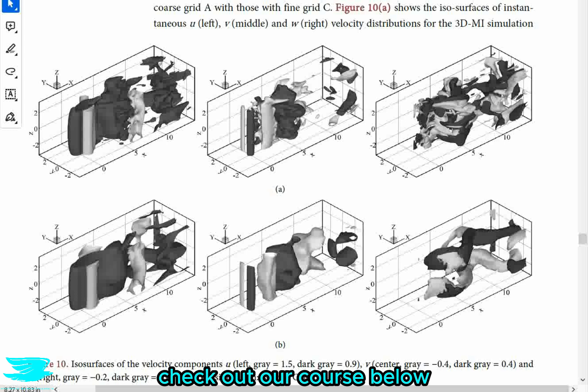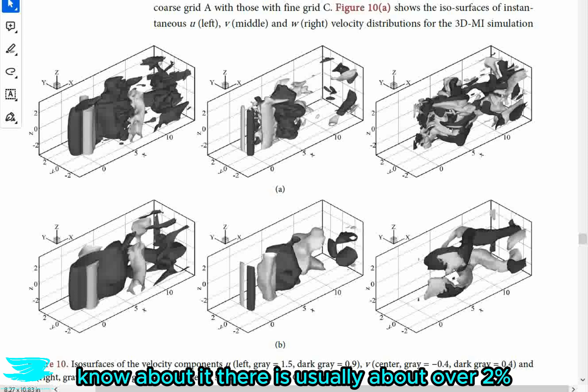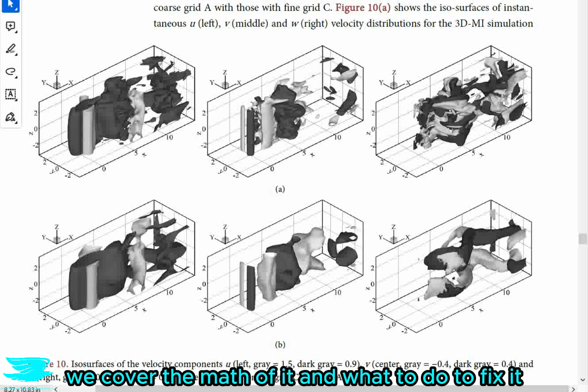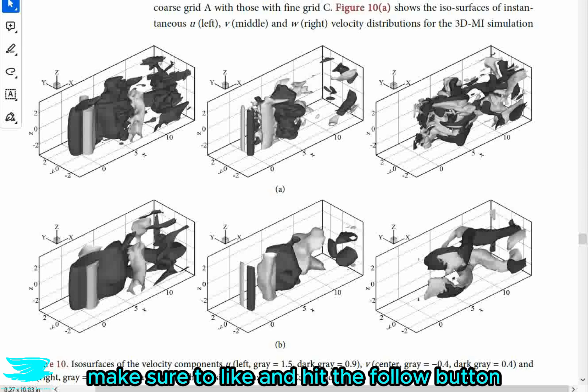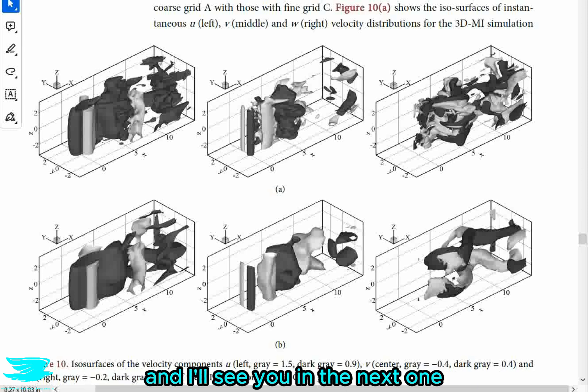And on that note, if you want to learn how to do OpenFOAM, check out our course below. And if you want to make your experiments more accurate, as I mentioned earlier, there are errors in most aerodynamic data, and the researchers don't even know about it. The errors are usually about over 2%, and in that MSUHawk link, we cover the math of it and what to do to fix it. So if you like this podcast, make sure to like and hit the follow button, whichever platform you're on, and I'll see you next one. Peace, amigos.